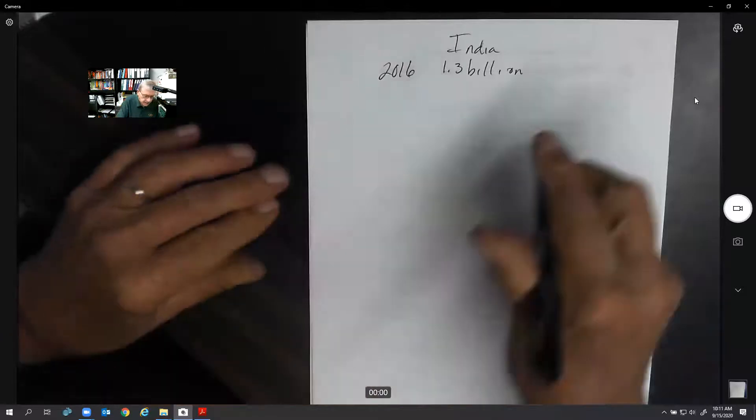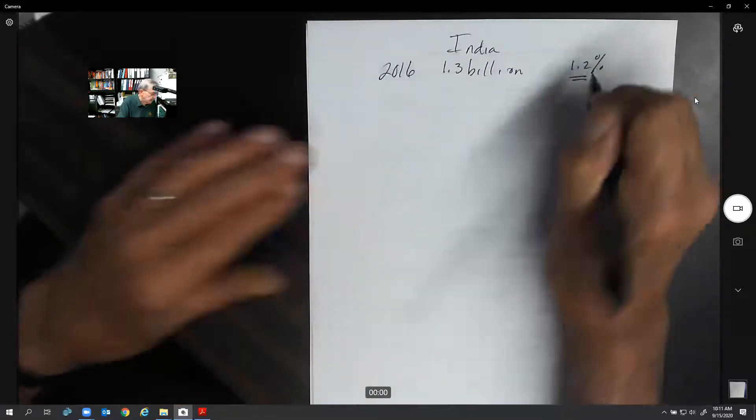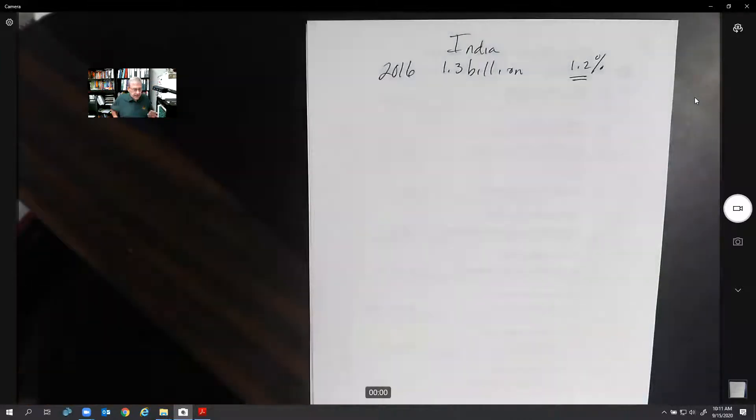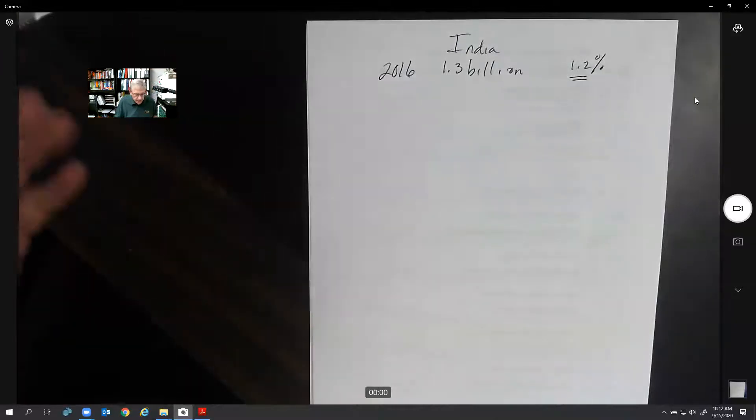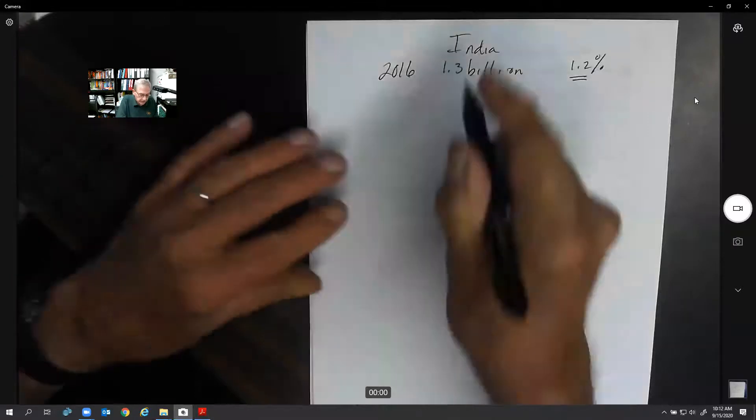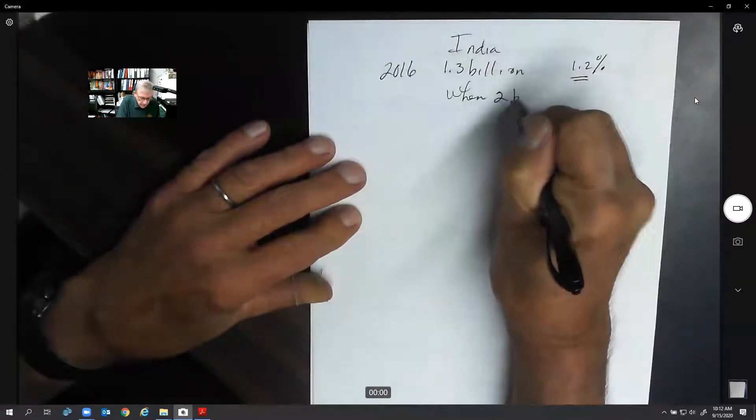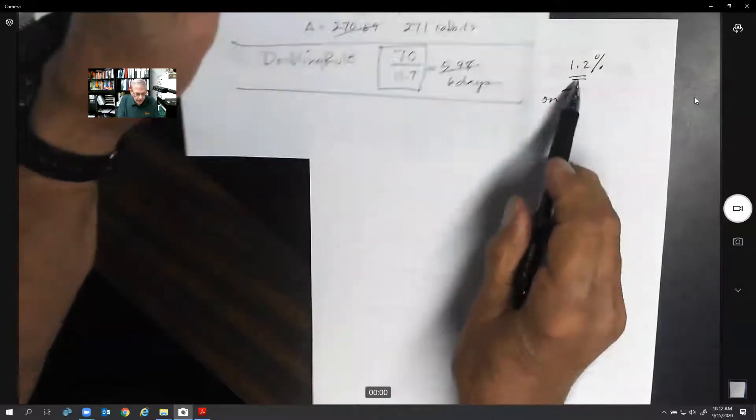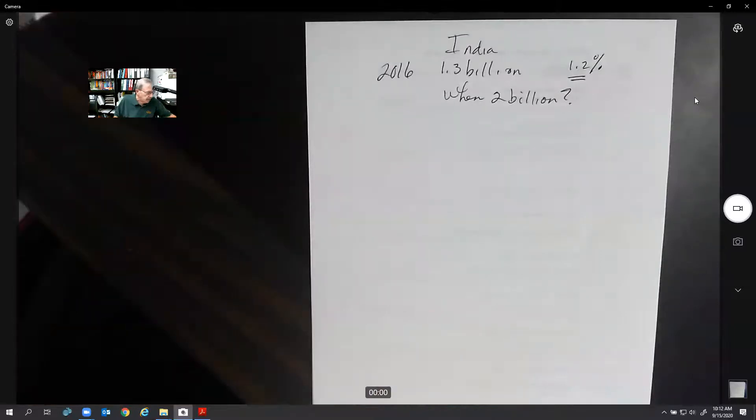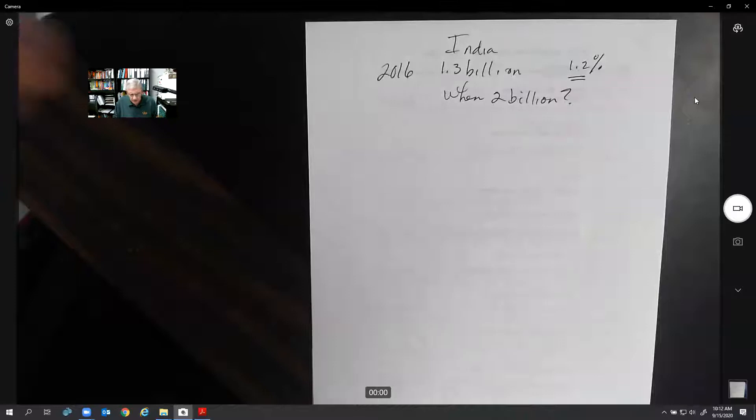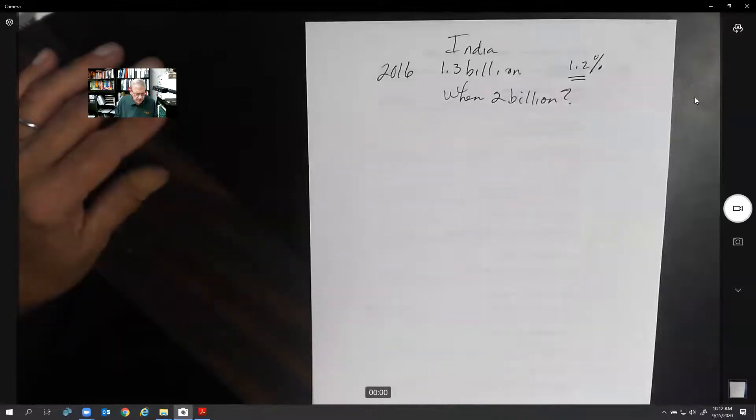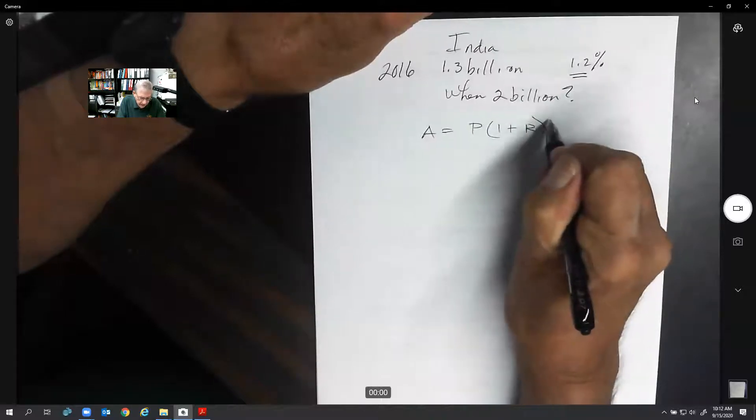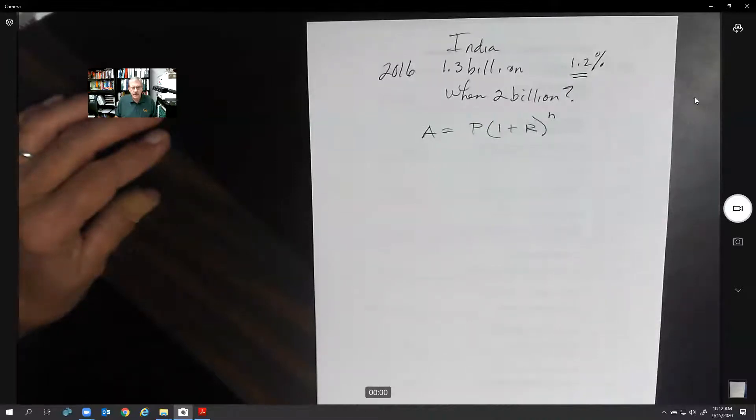In 2016, the population of India was 1.3 billion, and its growth rate is 1.2% per year that it's increasing by. We're going to assume that this is remaining constant. But instead of doing what the book does, I want to know when is the population of India going to reach 2 billion? That's going to be our format. We want the population to be 2 billion. Right now it's 1.3 billion.